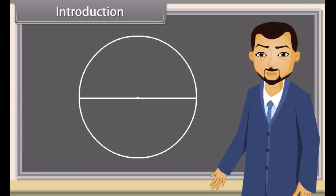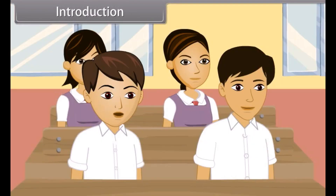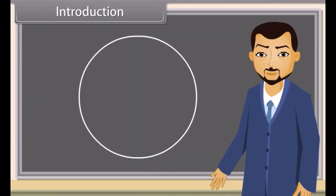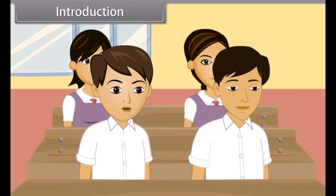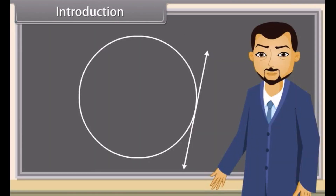Yes, you are right. And what if I mark a line segment here? What is this now? It's a chord. Correct. And what do we call this line? Tangent. Yes, this is a tangent of the circle.